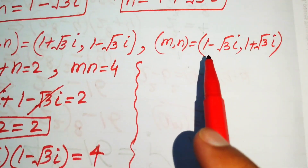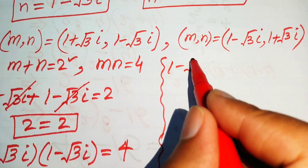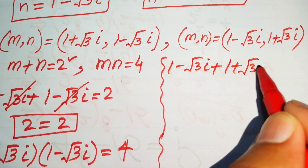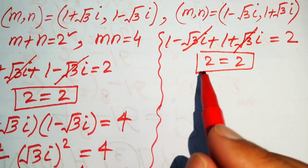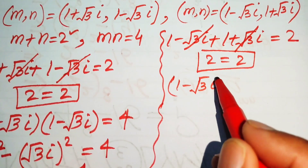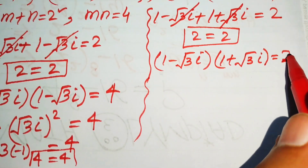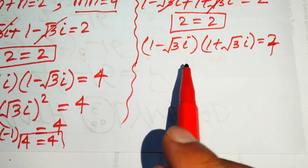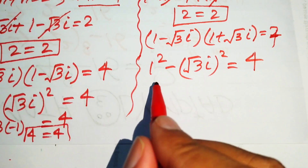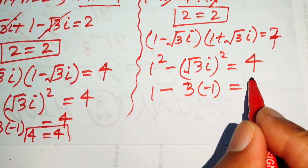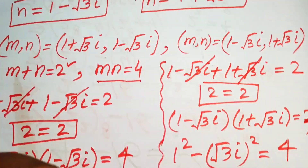Similarly, for the second solution: m equals 1 minus root 3 iota and n equals 1 plus root 3 iota. Checking equation 1: (1 minus root 3 iota) plus (1 plus root 3 iota) equals 2. The iota terms cancel and we get 2 equals 2, confirmed. Checking equation 2: (1 minus root 3 iota)(1 plus root 3 iota) equals 1 minus 3 times minus 1 equals 1 plus 3 equals 4. Confirmed.